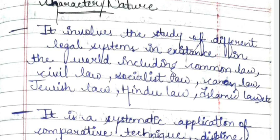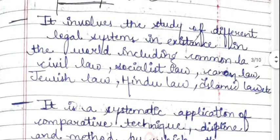Now we will see the characteristics and features of comparative law. I have mentioned three. First, it involves the study of different legal systems in existence in the world, including common law, civil law, socialist law, canon law, Jewish law, Hindu law, Islamic law — it simply involves the study of the different legal systems existing in the world.